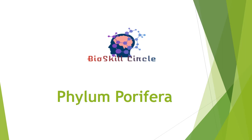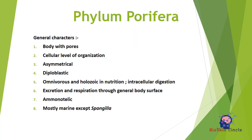Welcome to our channel Bio Skill Circle. Today we are going to discuss the general characteristics of Phylum Porifera. The first general characteristic is body with pores — these are pore-bearing animals, commonly called sponges. Pores are of two types: numerous and smaller ones called ostia, and one or few larger ones called oscula, which act as inlets and outlets of water current.